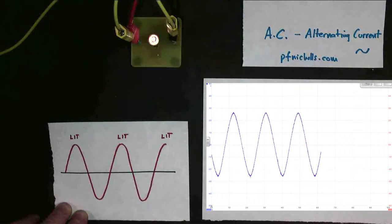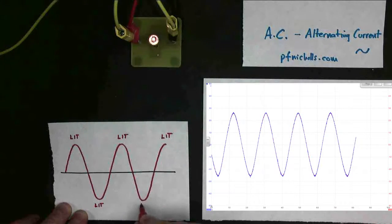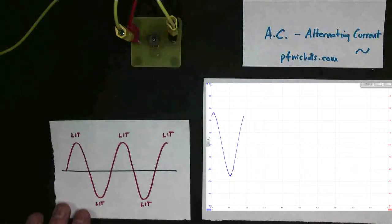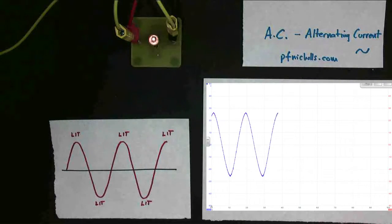But it's also lit down here and lit down here, because a bulb doesn't mind which way the current flows. It lights up equally with the current going positive to negative or negative to positive.